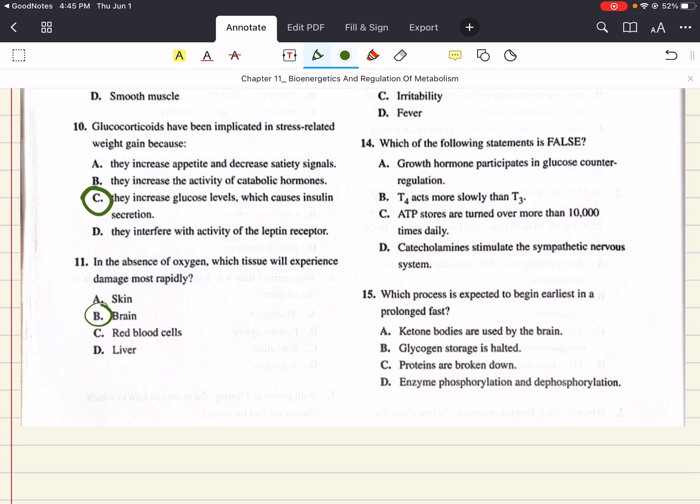14 says, which of the following statements is false? Growth hormone participates in glucose counter-regulation. T4 acts more slowly than T3. ATP stores are turned over more than 10,000 times daily. Catecholamines stimulate the sympathetic nervous system. Which of the following statements is false? It's going to be C. ATP stores are turned over only about 1,000 times per day, not 10,000. So 14 is C.